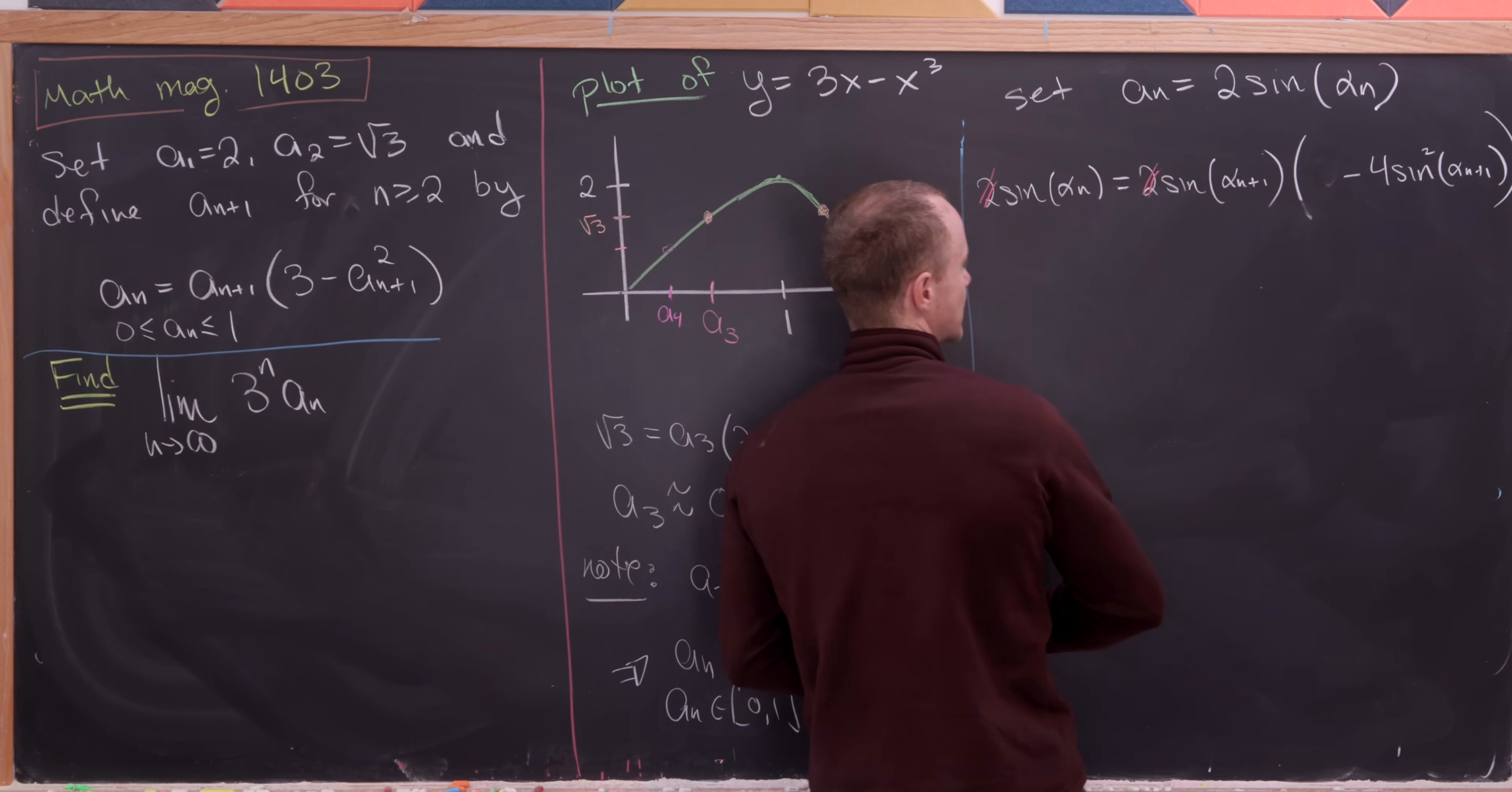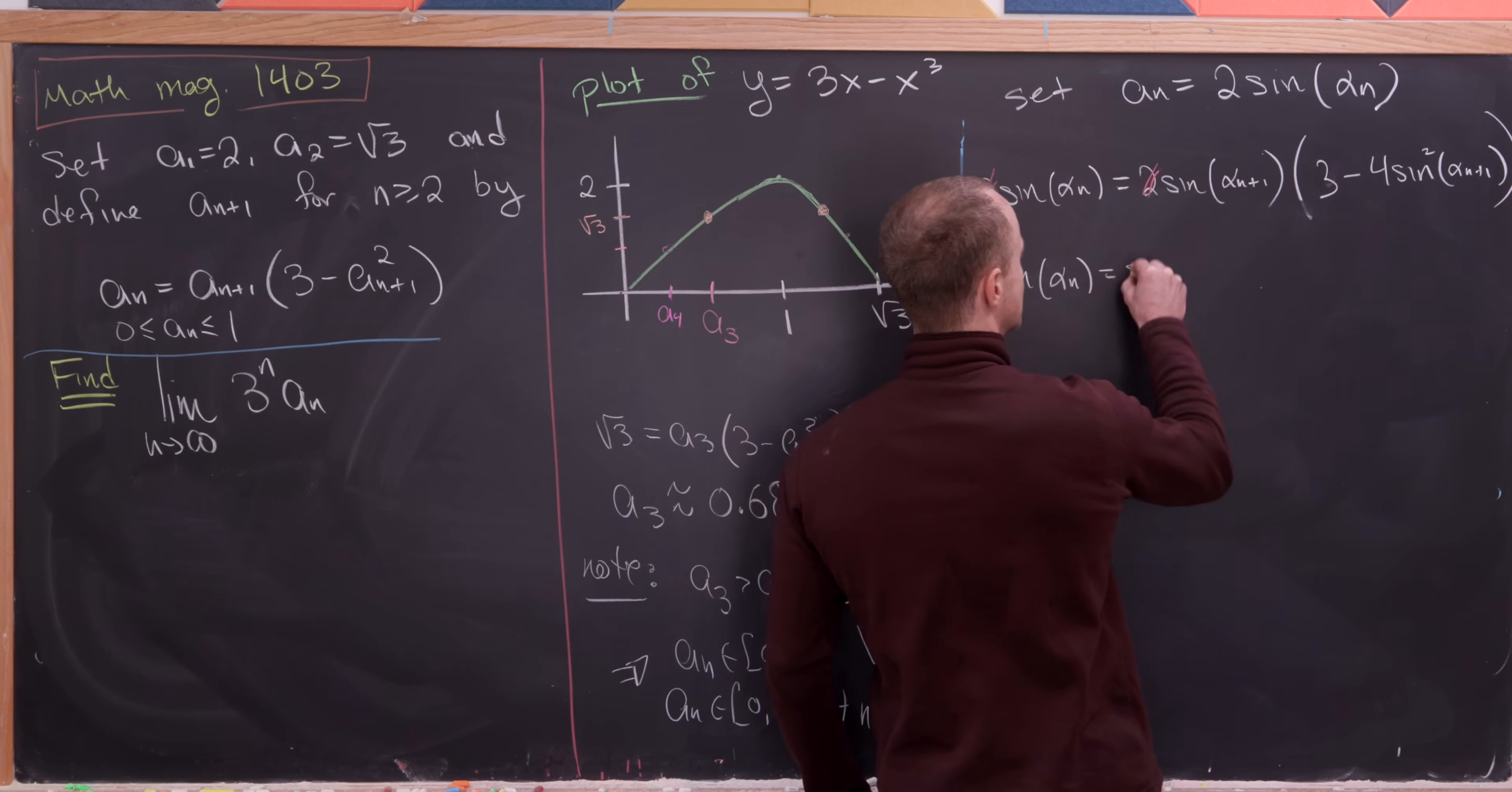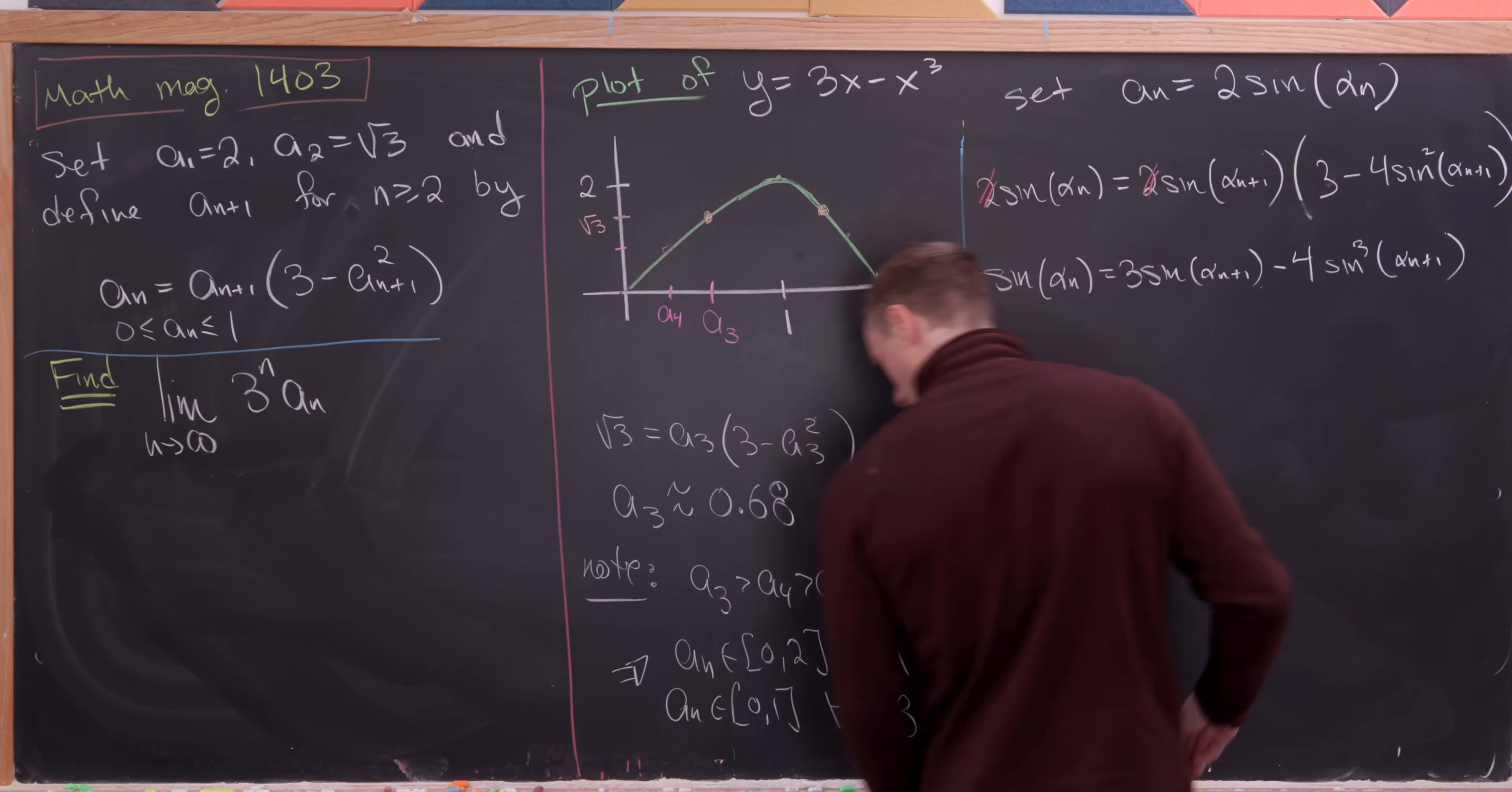We can cancel these 2s from both sides. Oh, that's not the 2. That's the 3. So we'll cancel the 2s from both sides, and then that's going to give us the following. So we'll have sine of alpha n is equal to sine of alpha n plus 1 times 3, multiplying this through, minus 4 sine cubed of alpha n plus 1.